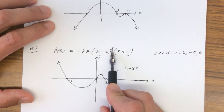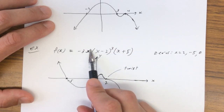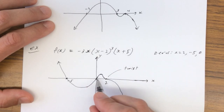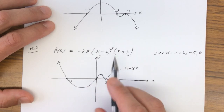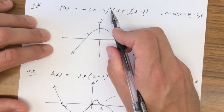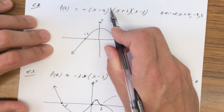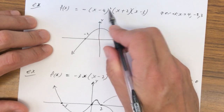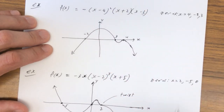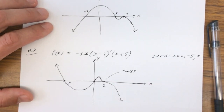To summarize: any time a factor has an odd degree it's going to go through with a twist — unless it's degree 1, which just goes straight through like a line. If a factor has an even degree — degree 2, degree 4, degree 6 — it's just going to touch the x-axis and turn back. Those are the key rules for graphing polynomial functions.